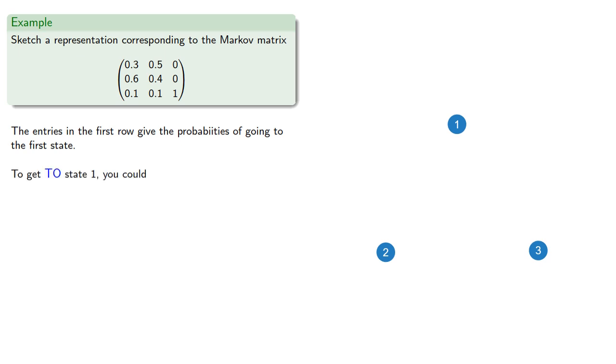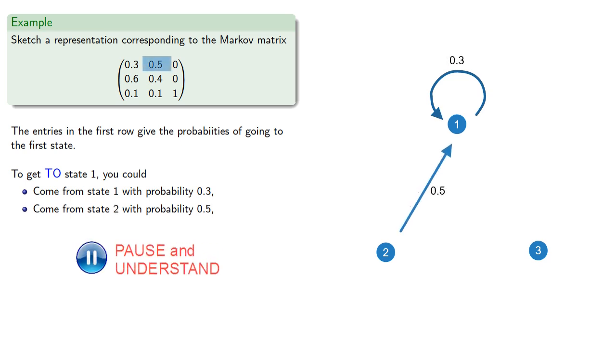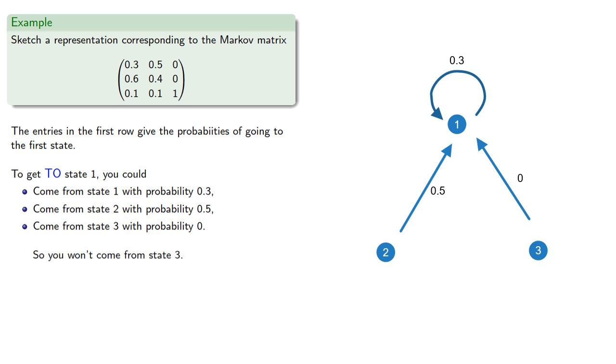The entries in the first row give the probabilities of going to the first state. So to get to state 1, we could have come from 1 itself with probability 0.3. We'll draw that as a loop. We could have come from state 2 with probability 0.5. And we could have come from state 3 with probability 0. And note that this really means you won't come from state 3.